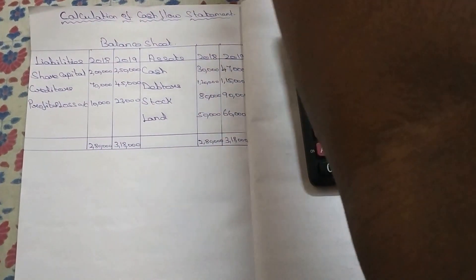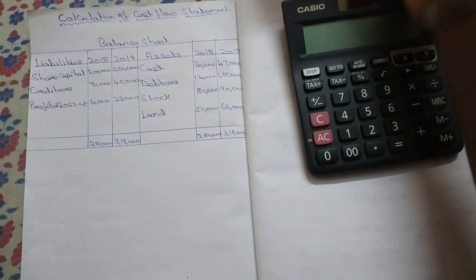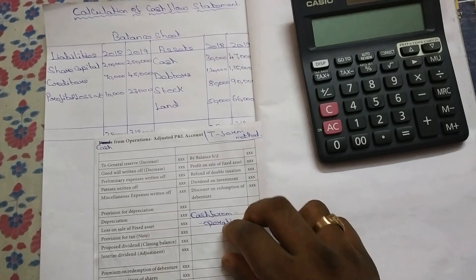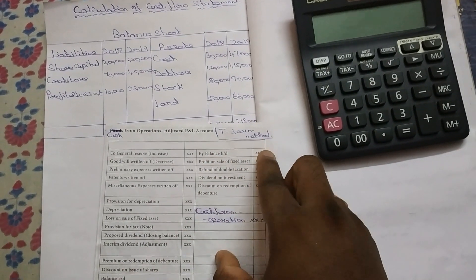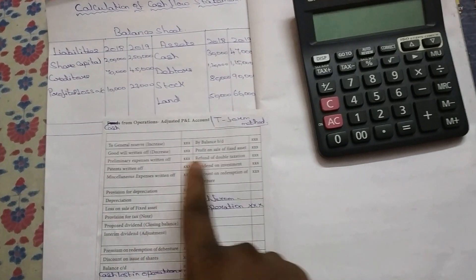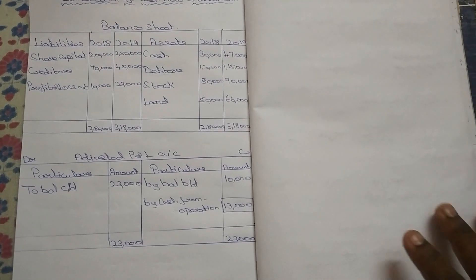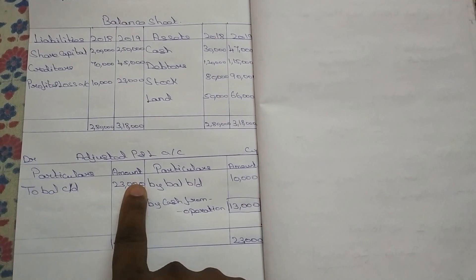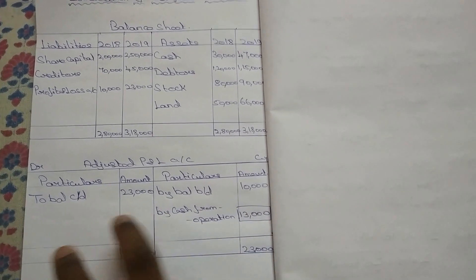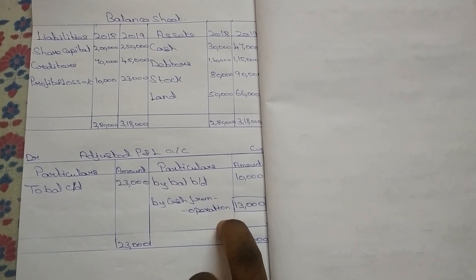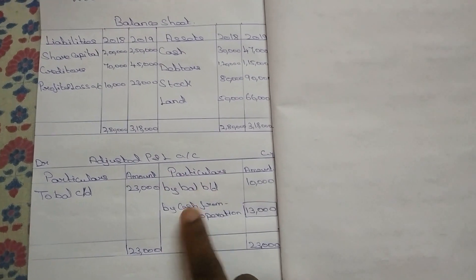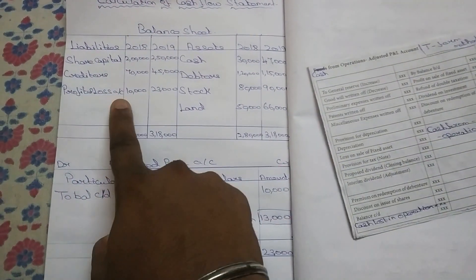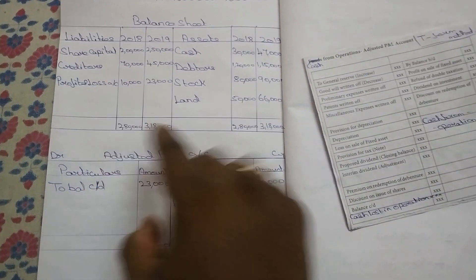Let's look at the opening balance and closing balance. Let's do the opening balance — balance brought down is the opening balance. The closing balance is $23,000 and the balance is $13,000. Let's go to adjust P&L: balance brought down $10,000, balance carried down is $23,000, and the balance is $13,000. This is cash from operation, or cash lost in operation. Now this is our balancing figure: $13,000.